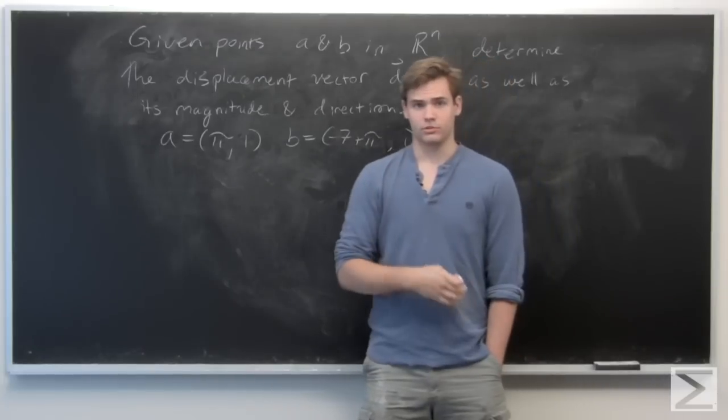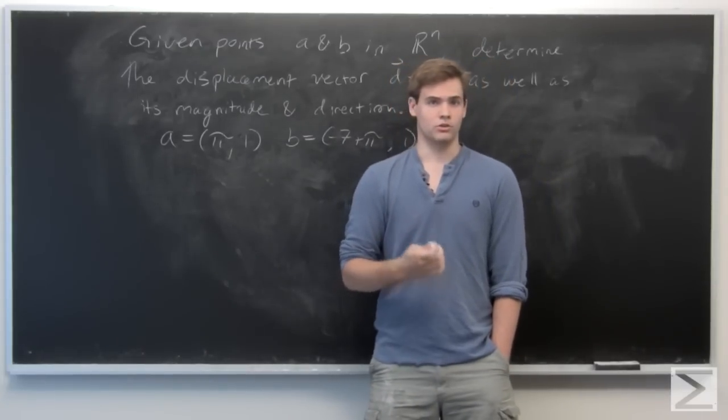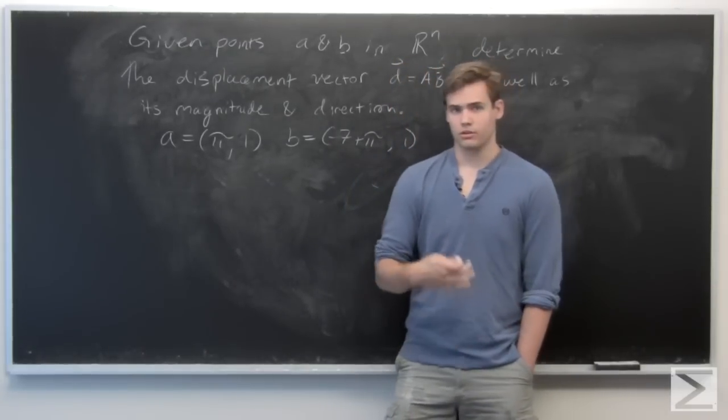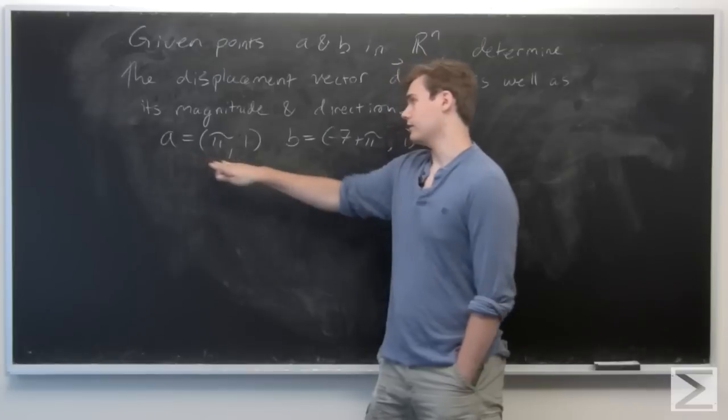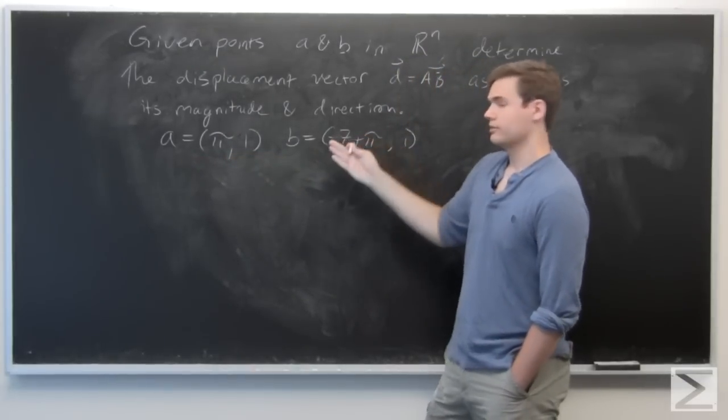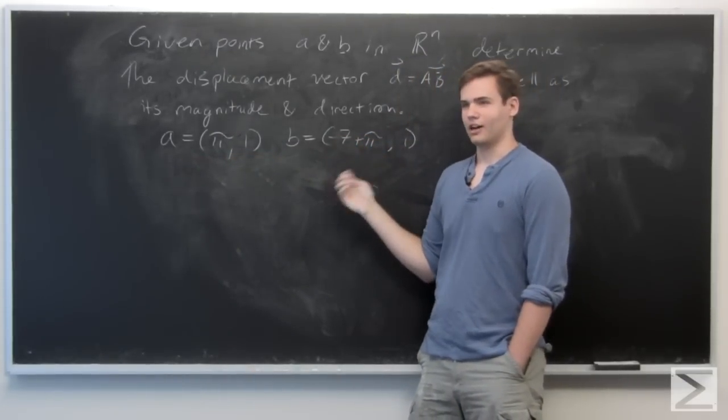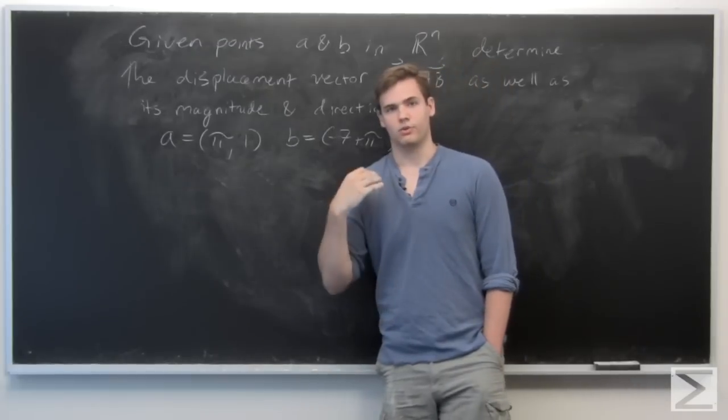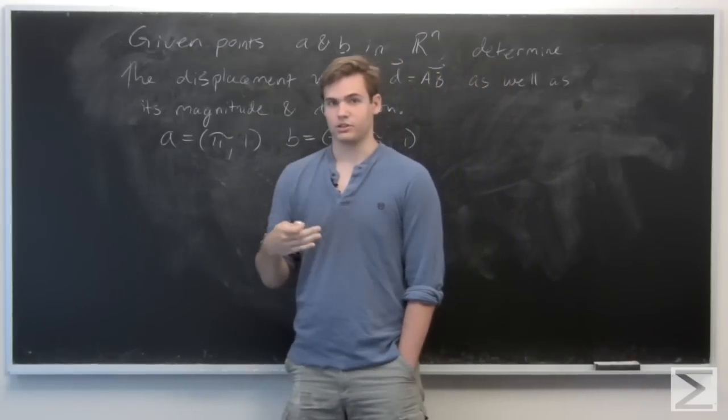So here the two given points are a is π comma 1 and b is minus 7 plus π comma 1. And so we begin to find the displacement vector d.